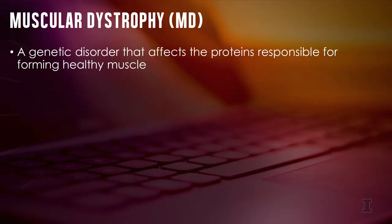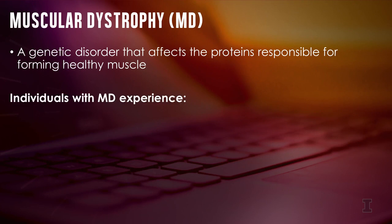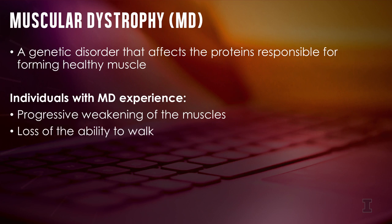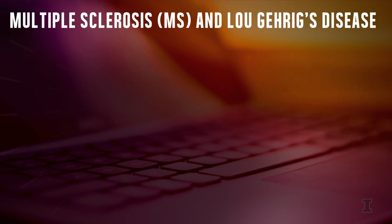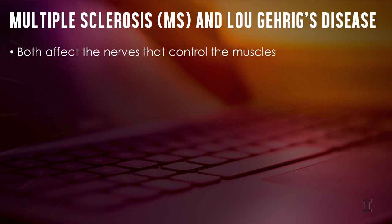With muscular dystrophy, a genetic disorder that affects the proteins responsible for forming healthy muscle, individuals experience a progressive weakening of the muscles. Some eventually lose the ability to walk, while others may have difficulty breathing or swallowing. While muscular dystrophy affects the proteins that build muscles, multiple sclerosis and Lou Gehrig's disease affect the nerves that control the muscles.